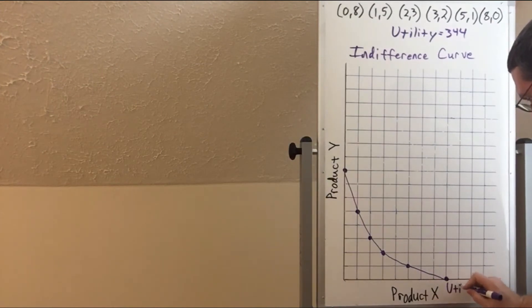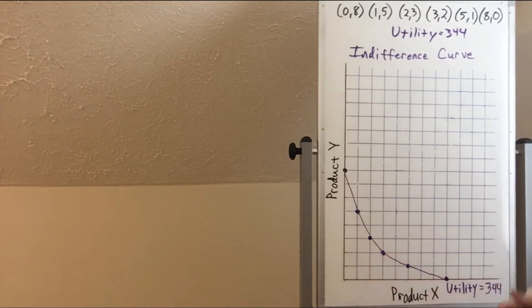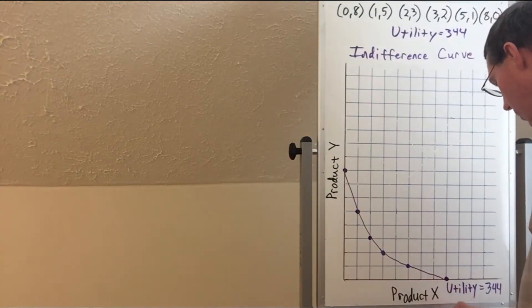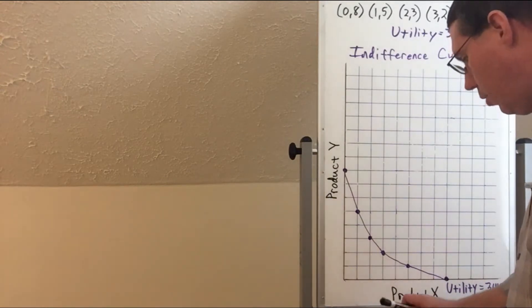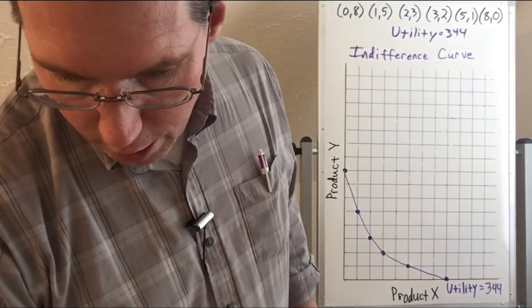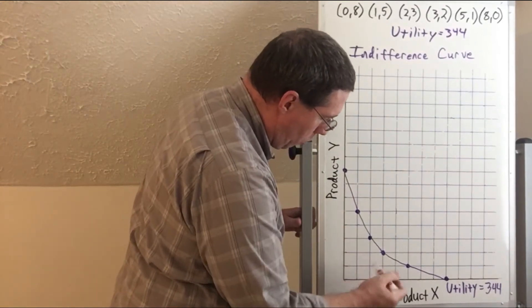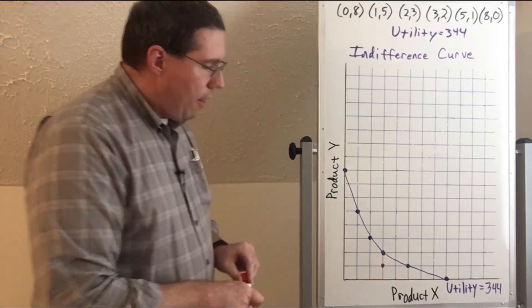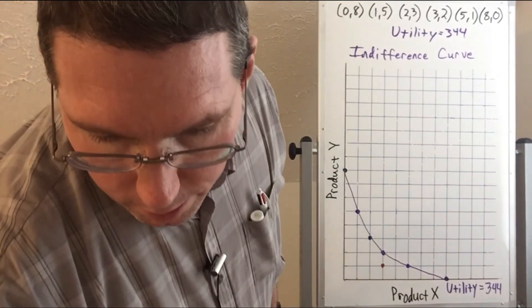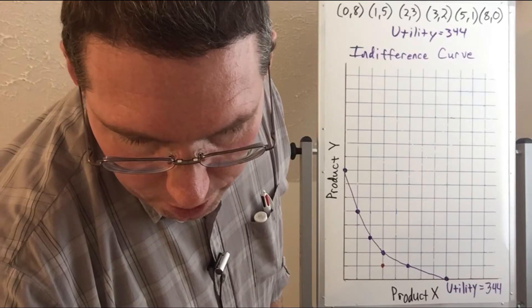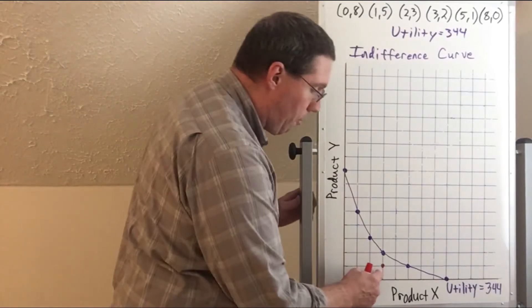This indifference curve in particular represents a utility of 344. And here's what I need you to understand: we could take our same table and look at the combination of 3X and 1Y. Three of X and one of Y gives us — 3X gives 144 and 1Y gives 114 — so that's 258. So at this point we're at 258 utility.